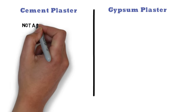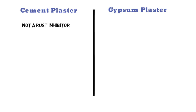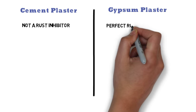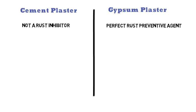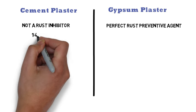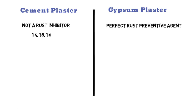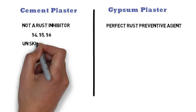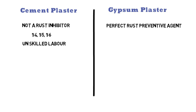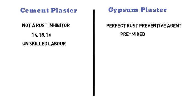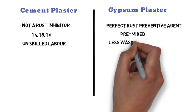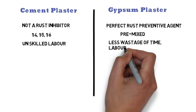Cement plaster is not a rust inhibitor. Gypsum plaster is the perfect rust preventive agent and also inhibits corrosion of electric metal fittings, pipes, etc. The mixture of sand and cement is done on site in different ratios. It is generally done by unskilled labor and hence not likely to be accurate and perfect. Gypsum plaster is pre-mixed and available in easy to handle bags — only addition of water is required, resulting in less wastage of time, labor and material.